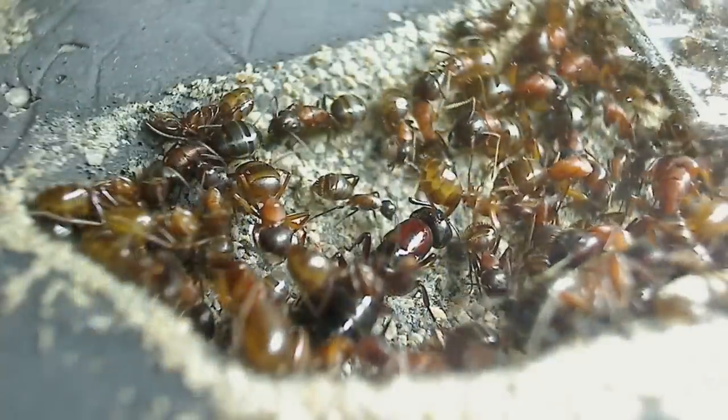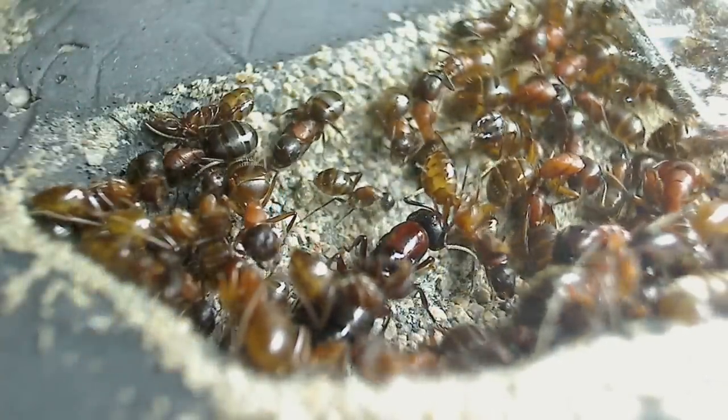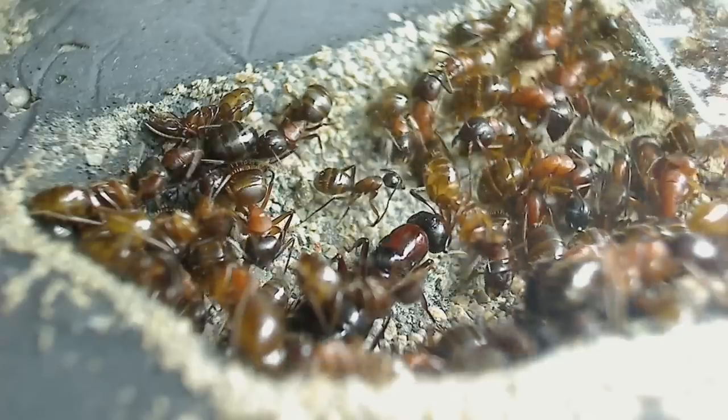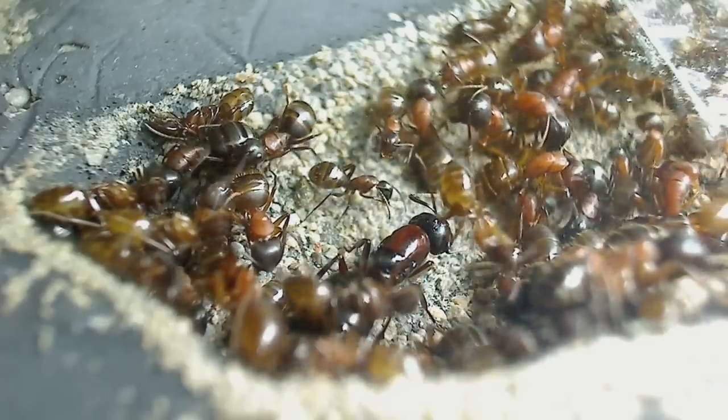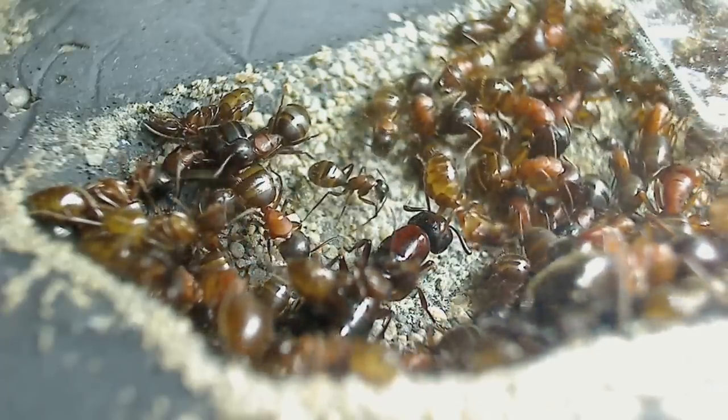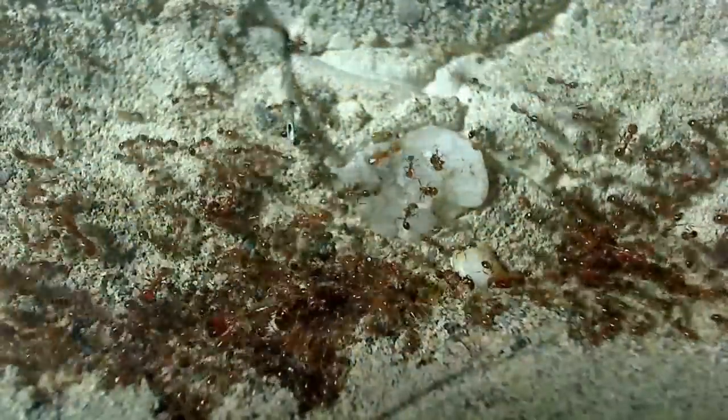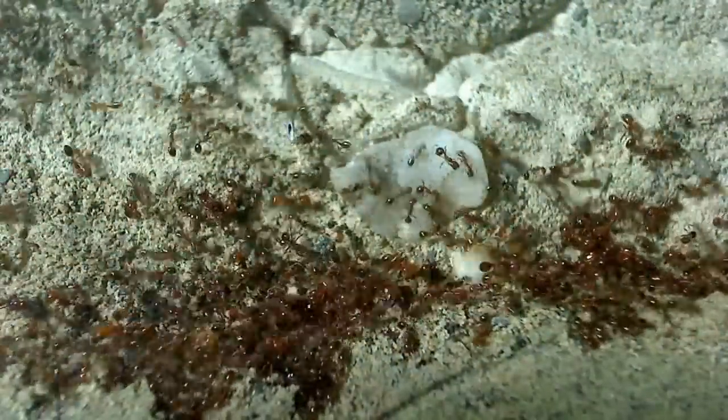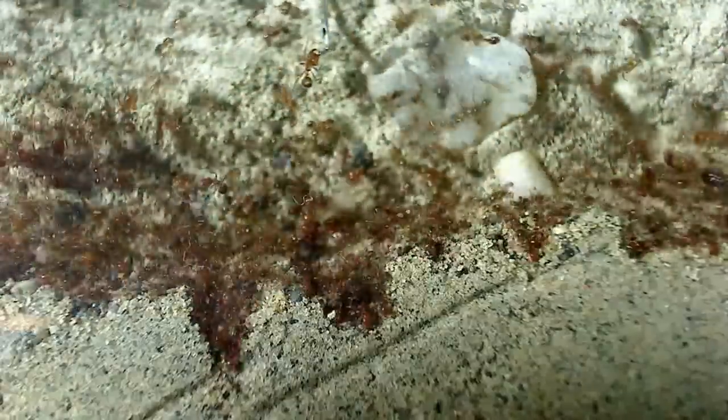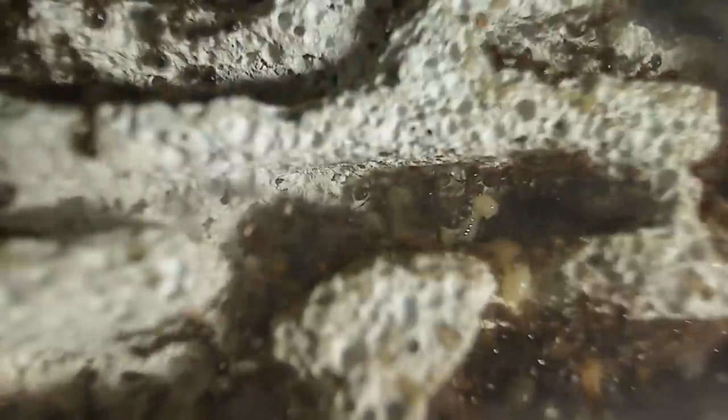Now the problem we found with the commercially available formicaria out there for us ant keepers was that there weren't any formicaria specially designed to cater to the specific needs of specific ants. It's a known fact that different ants create different nests. Of course chambers and tunnels are the main design structures of all ant nests, but size, length, curvature, and other factors make each nest design unique per species.